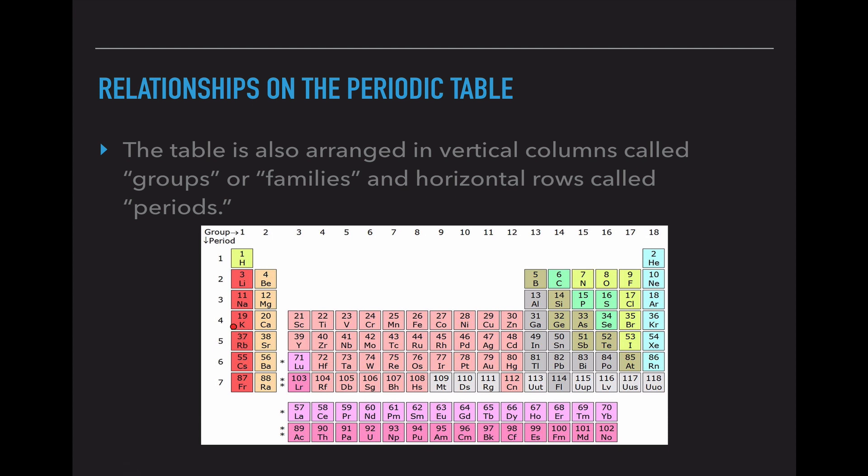The periodic table is also arranged in vertical columns. So this is the first column, that is group one. The second column, group two. The third column, group three. All the way across till we reach the 18th column or group 18.